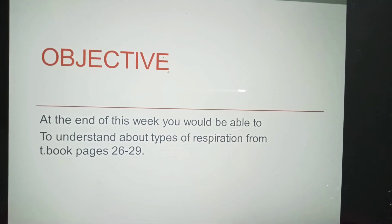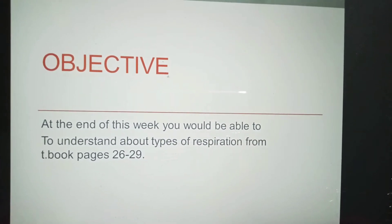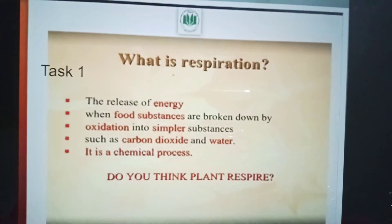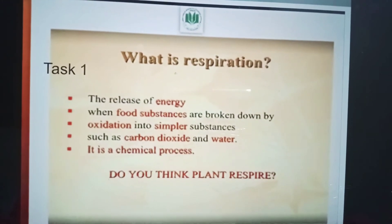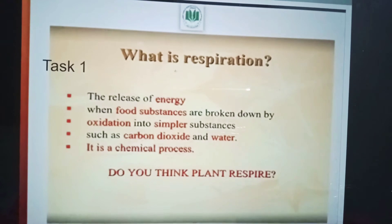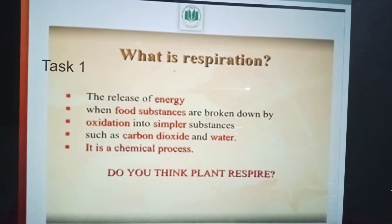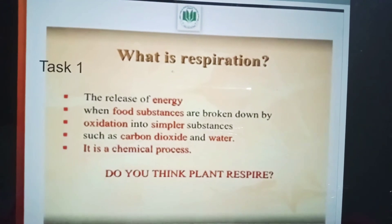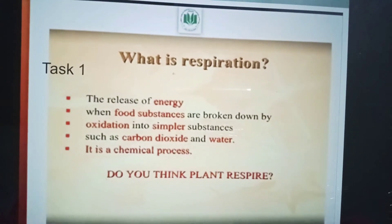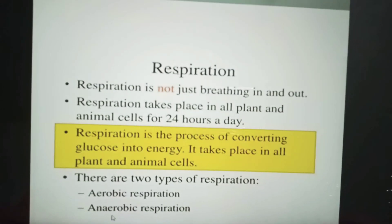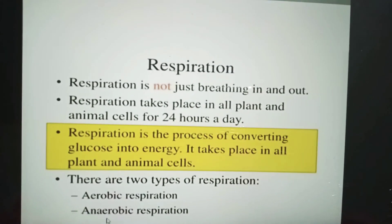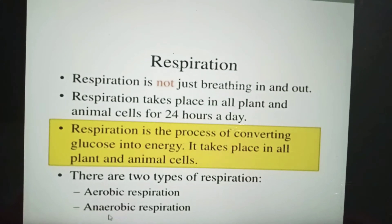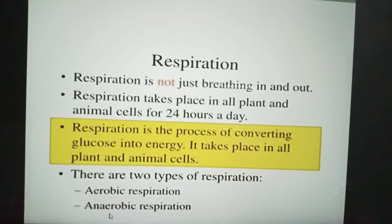Chapter number 3 is Respiration in Plants. The objective is that by the end of this lesson, from textbook pages 26 to 29, you would be able to understand the types of respiration. Task 1: What is respiration? It is the release of energy when food substances are broken down by oxidation into simpler substances such as carbon dioxide and water. It is a chemical process. Respiration takes place in all plant and animal cells for 24 hours a day.